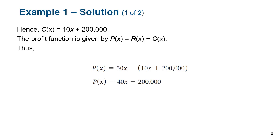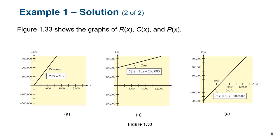The profit function is revenue minus cost. Our revenue function is simply 50x because we sell each MP3 player for $50, so x units times $50 gives 50x. We subtract the cost function: 50x − (10x + 200,000) = 40x − 200,000. That is our profit function. We can graph all three — revenue, cost, and profit.